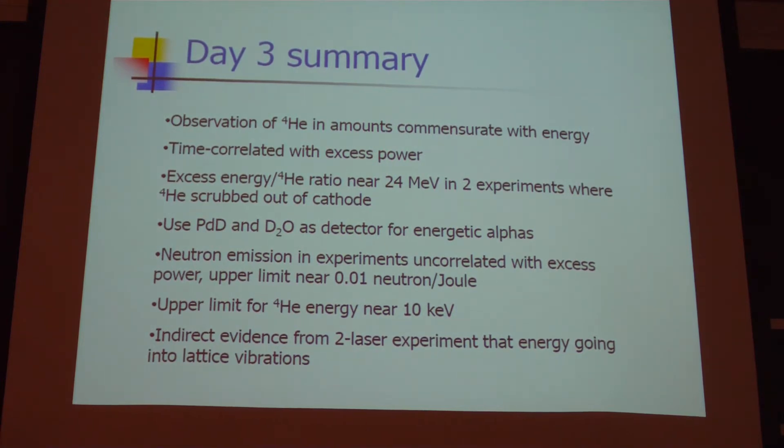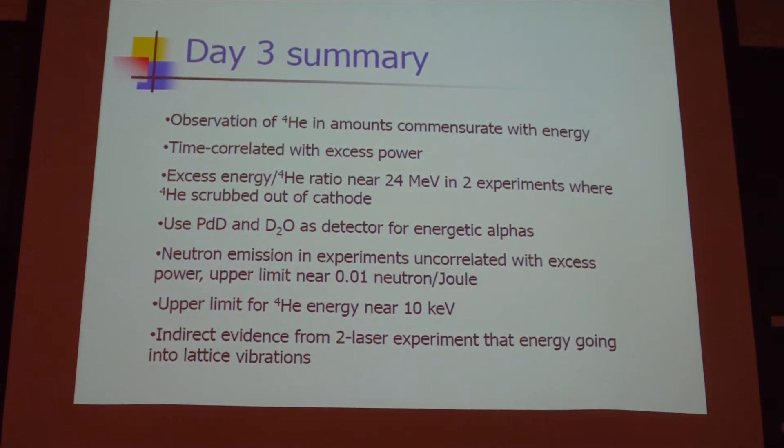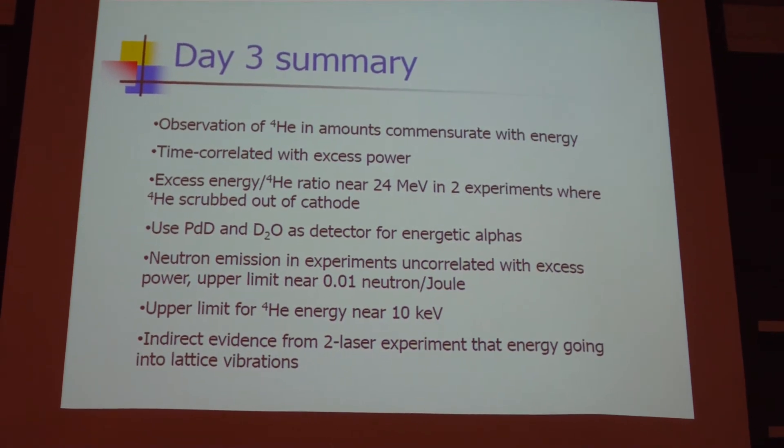24 MeV is important because it's the mass difference between two deuterons and helium-4. If you're getting helium-4 and physicists look at it as being an alpha particle, especially if it's got some energy, the question is how much energy? We proposed to use PbD and D2O itself as nuclear detectors to answer that question.